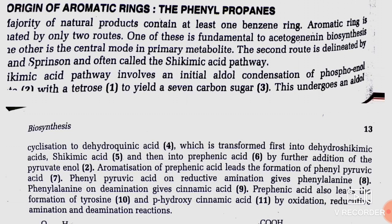Phenylpyruvic acid on reductive amination gives phenylalanine. Phenylalanine on deamination gives cinnamic acid. Prephenic acid also leads to formation of tyrosine and para-hydroxyphenylpyruvic acid by oxidation, reductive amination, and deamination reactions. Now I will tell you about the formation of benzene nucleus in natural products. The shikimic acid pathway is totally dependent on aldol condensation.